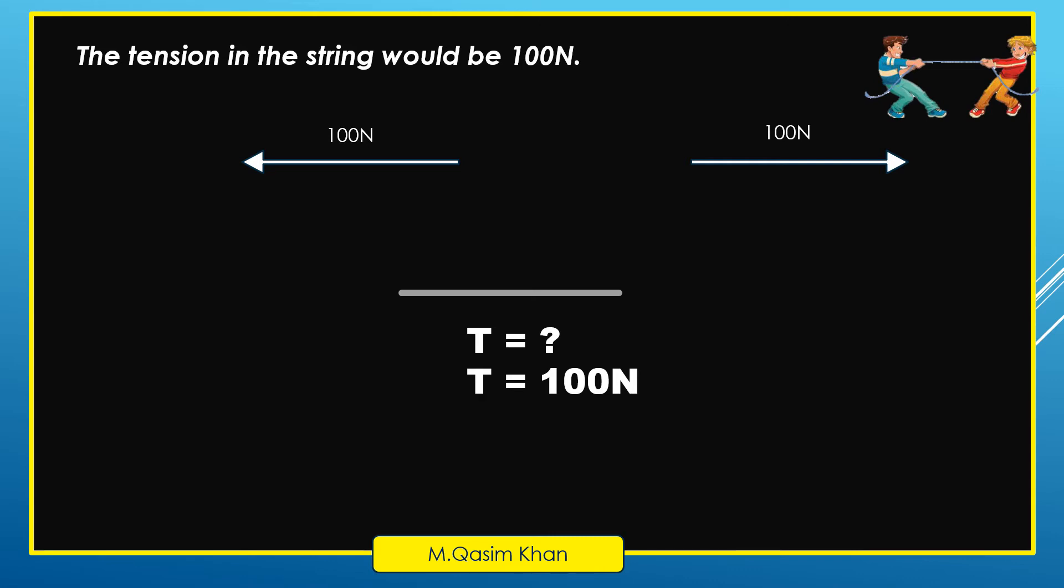To understand the concept, let one boy leave the rope. In that case, though the other boy is pulling with 100 Newton, the tension will become zero.